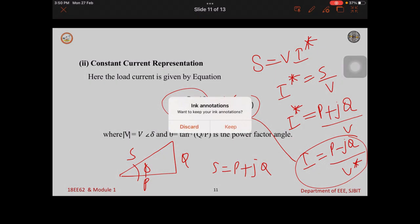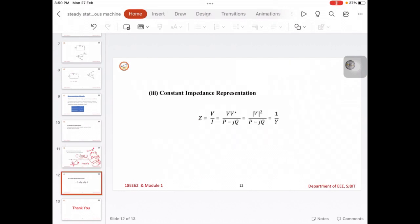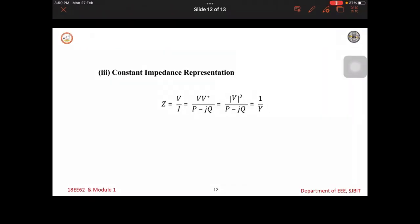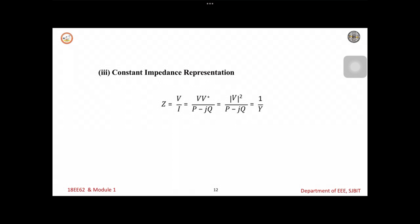Next we will see the third one. First one is constant power representation of load and the second one is constant current representation. Third one is constant impedance representation. Here it is quite often used in stability studies. This constant impedance representation. The load specified in megawatts and MVAR, that is real and reactive powers at nominal voltage, which is used to compute the load impedance.